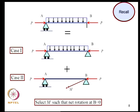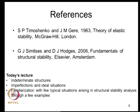We started discussing indeterminate structures - a propped cantilever carrying UDL and axial load P. We released the fixity condition so the problem became statically determinate, then considered another problem where an unknown moment M was added such that the rotation at B is zero. In today's lecture we will continue discussing behavior of indeterminate structures, discuss issues related to imperfections and ideal situations, and consider typical situations arising in structural stability analysis through examples, to become familiar with issues we need to address using computational tools.